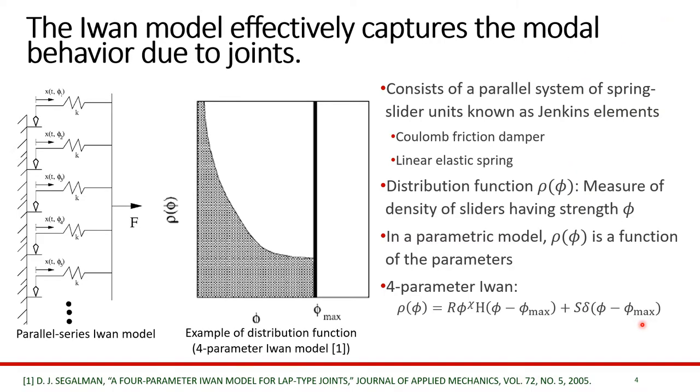There are many different hysteretic models that exist, but the I1 model has been found most suitable in capturing bolted joint dynamics. The I1 model consists of a parallel system of Jenkins elements, which is a Coulomb friction damper connected in series with a linear elastic spring. A distribution function is defined to measure the density of the sliders that have strength phi. In a parametric model, the distribution function ρ(φ) is typically a function of those parameters.